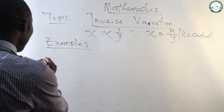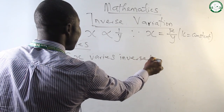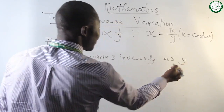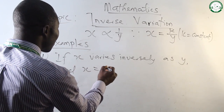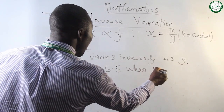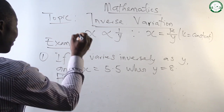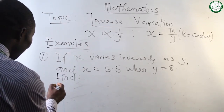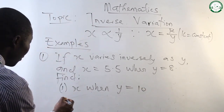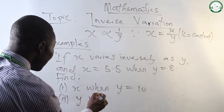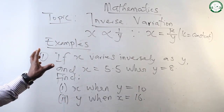Let's look at some examples. Number 1: If x varies inversely as y, and x equals 5.5 when y equals 8, we are asked to find two things. Number 1: find x when y equals 10. Number 2: find y when x equals 16.